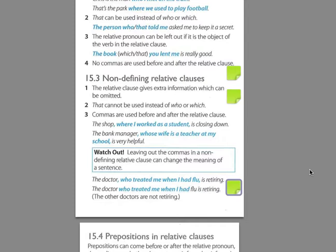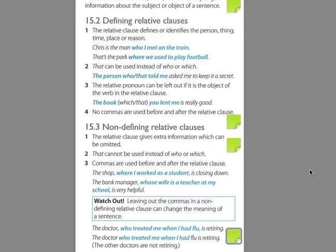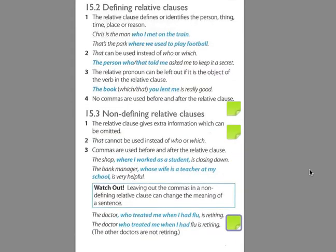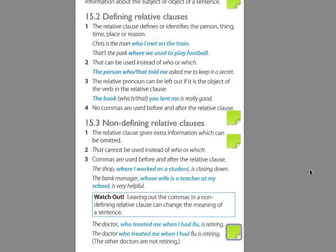All right. Those are the two basic kinds of relative clauses — in fact, the only two kinds: defining and non-defining relative clauses.